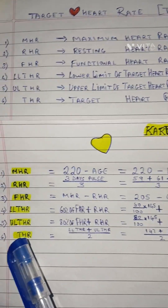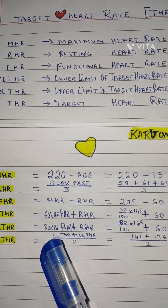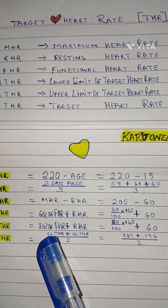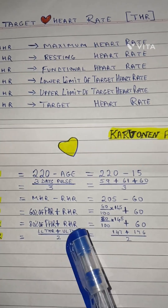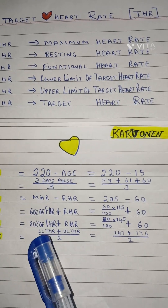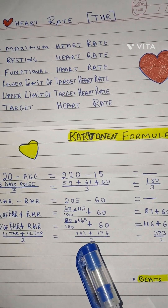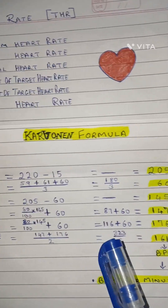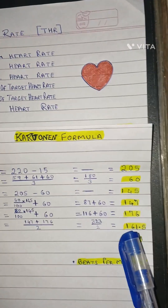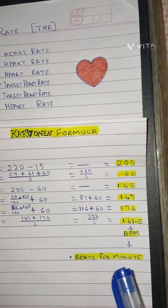For the Target Heart Rate, the last step: take the average of the two limits. That is Lower Limit of Target Heart Rate plus Upper Limit of Target Heart Rate, divided by 2. So 147 plus 176, divided by 2, equals 161.5 BPM - Beats Per Minute.